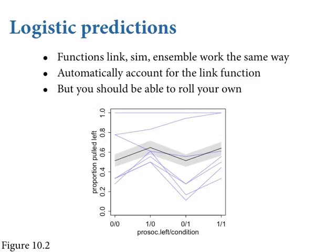The black line is the posterior mean proportion pulled with a 95% interval, and it picks up the zigzag pattern. When the prosocial option is on the left, they pull left more; when it's on the right, they pull right more. That's coming from the fact that they're attracted to food. But there's almost no effect at all — if anything, it's slightly negative — of the other individual being present.